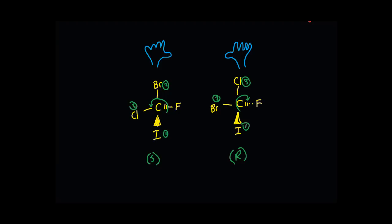So a good way to do it is if you are able to arrange a molecule so that the smallest one goes into the board, you just have to look at the remaining three. If it's going to the right, it's going to be an R. Otherwise it's an S.